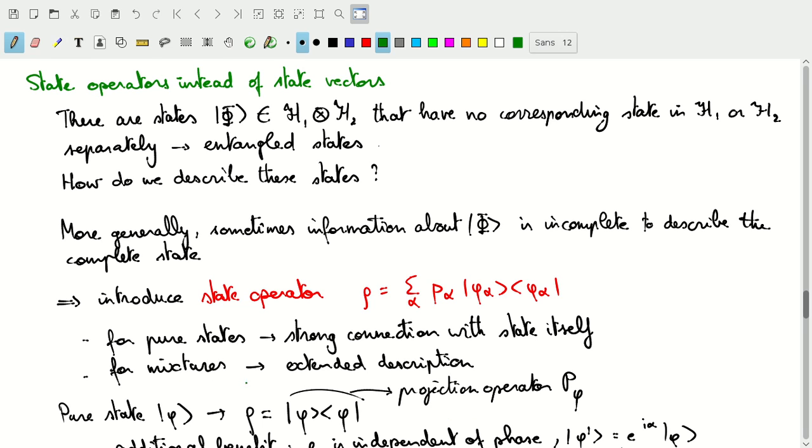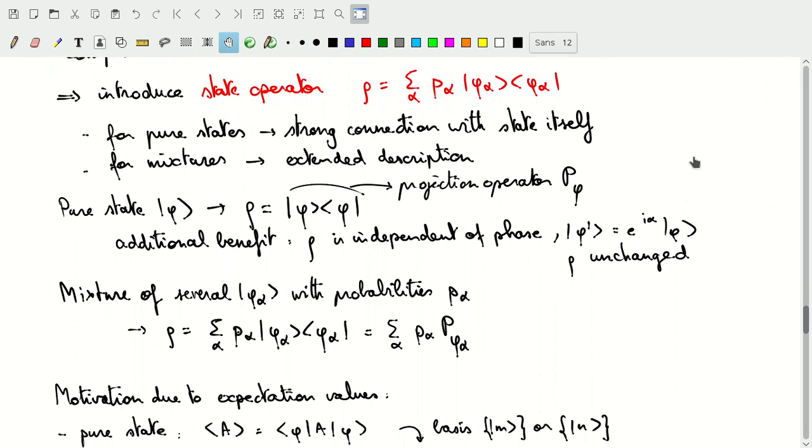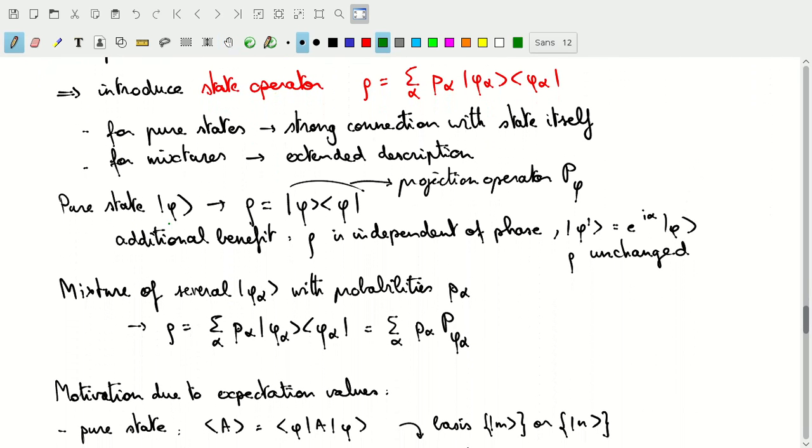That allows us to introduce some incomplete knowledge about the state of the system already in an operator. And again, even in the case of mixtures, of course, we'll have projection operators that play a role there. For the pure state, as I've already pointed out, rho is phi phi, the outer product.